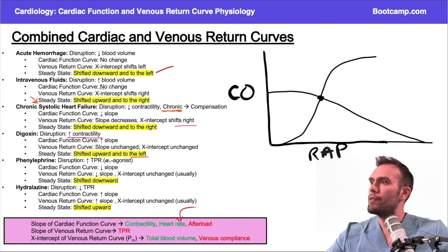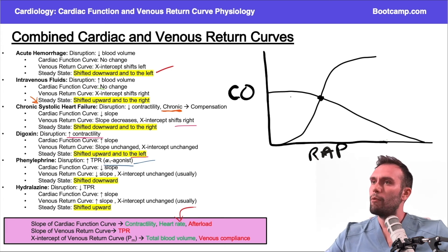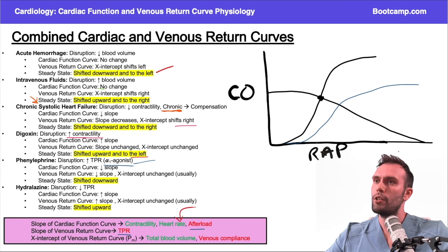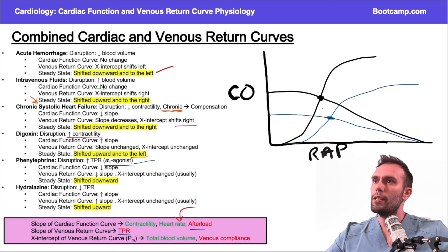Phenylephrine is primarily an alpha-1 agonist, so it increases total peripheral resistance, acting at the arterioles. Since afterload and TPR appear in equations for both the cardiac function curve and the venous return curve, increasing afterload lowers the slope of both curves. Importantly, changing TPR does not change the mean systemic filling pressure — it only lowers the slopes. The new steady state shifts mostly downward, maybe slightly to the right.